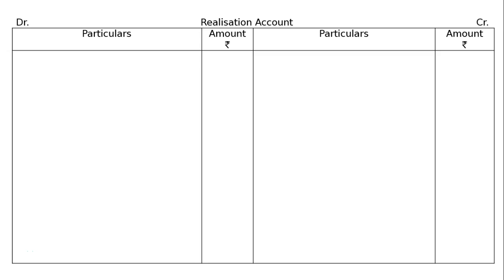The first line of the question is: A, B and C were in partnership sharing profits in the ratio of 3:2:1. The balance sheet of the firm as at 31st March 2017 was given. We need to prepare Realization Accounts, recording the dissolution in the books of the firm.